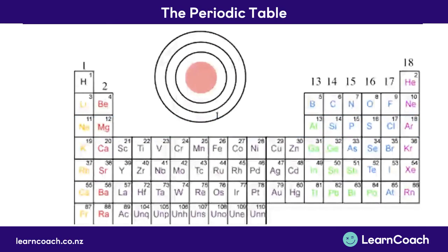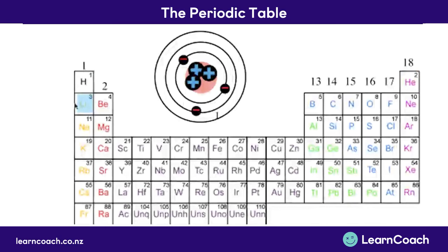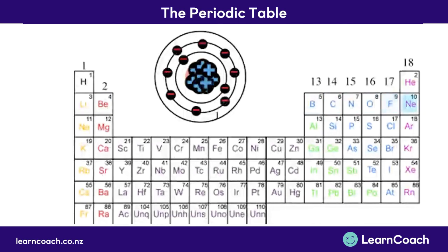Now let's have a look at how the atoms change as we go across our rows. Here our first atom has one proton and one electron, and across here we've got a full outer shell. Lithium has one electron in its outer shell, then two, three, four, five, six, seven, and a full outer shell when we get to the right-hand side.